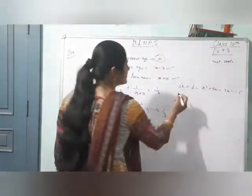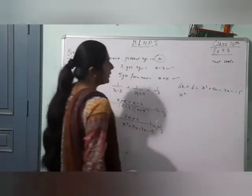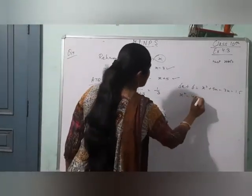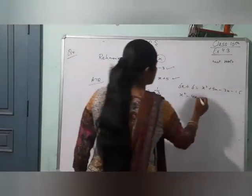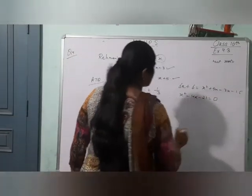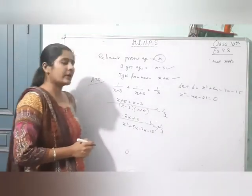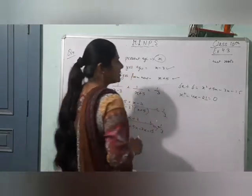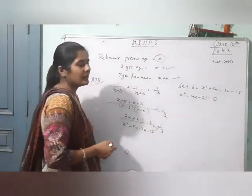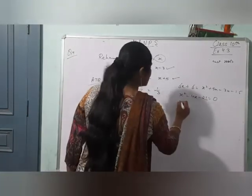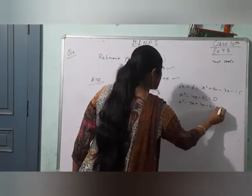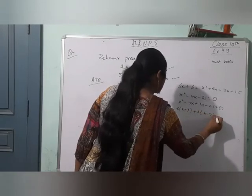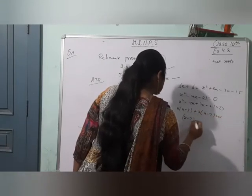Poori equation ko ek side leke jaate hain. Therefore x square plus 2x minus 6x minus 15 minus 6 equals 0. That gives x square minus 4x minus 21 equals 0. Ab isko quadratic formula se solve karna chahe toh wahan se kar lijiye, nahi toh factor banaa lijiye. 21 ke factors hote hain 7 and 3 — 7 threes are 21. Toh 7 and 3 se 4 difference aa jaayega.